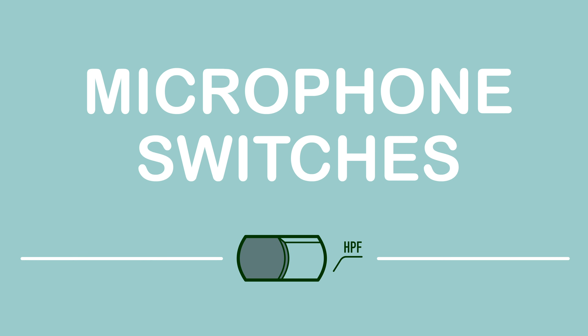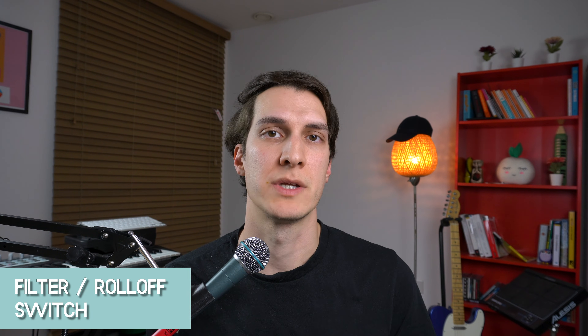Most microphones have a single polar pattern, but some come with switches that enable you to change the polar pattern so that your microphone can be used in a variety of situations. There are also other useful switches found on some microphones. The first is a pad switch, found on microphones with active circuitry such as condensers, which allows you to reduce the microphone's output signal by a certain amount — very useful when recording really loud sounds like drums that might cause distortion. The next is a filter switch, often in the form of a low frequency roll-off, which allows you to avoid picking up rumbly sounds such as engine noise or mains hum.